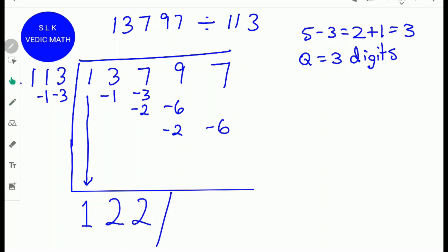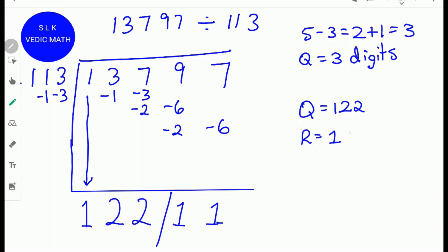Next, do 9 minus 6, which is 3, and 3 minus 2, which is 1. Write down the 1. Next, do 7 minus 6, which is also 1. Write down the 1. So the quotient is 122 and the remainder is 11.